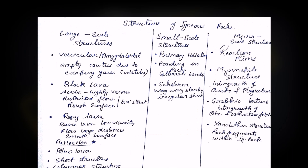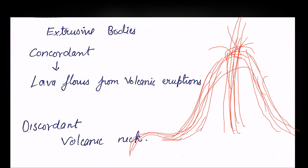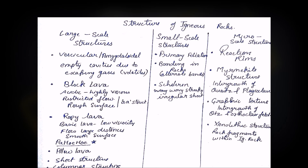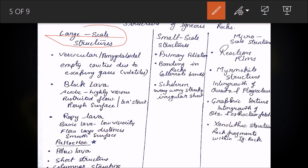Next is the structure of igneous rocks. Structures can be seen at three scales: large scale (also called mega structures), small scale, and micro scale.